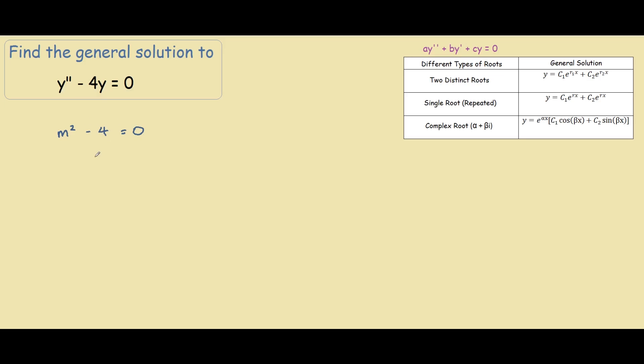This is our characteristic equation, so now we can do m squared equals to 4, therefore m equals to the square root of 4, plus minus, therefore equals to plus minus 2.